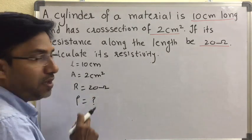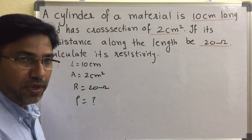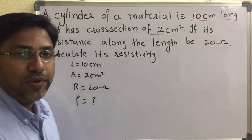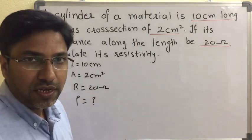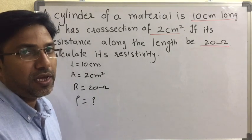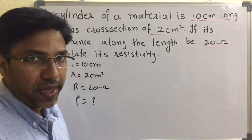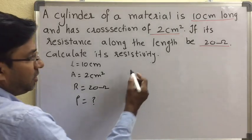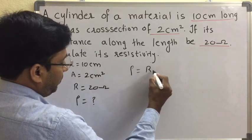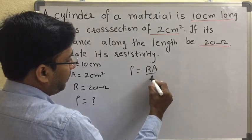Here length is in centimeters and area is in centimeter square. If you want to convert to meters you can, but since the units are consistent, you can cancel the ratio. The resistivity formula is rho equal to R times A divided by L.